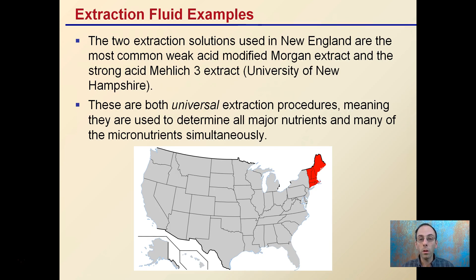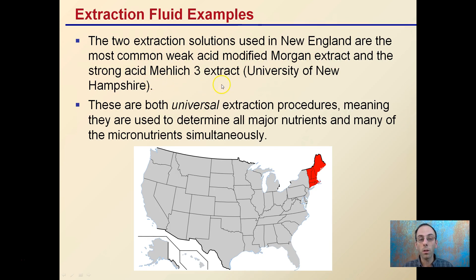Methods are going to be based on the region, and they assess a variety of nutrients and micronutrients at the same time. Even though there are different extraction fluids, and one may be more aggressive, they can both give you the same general idea of nutrient levels. Keep in mind, if you're comparing a modified Morgan extract versus a Mehlich-3, some nutrients may differ — that's just because of the extraction fluid that is used.